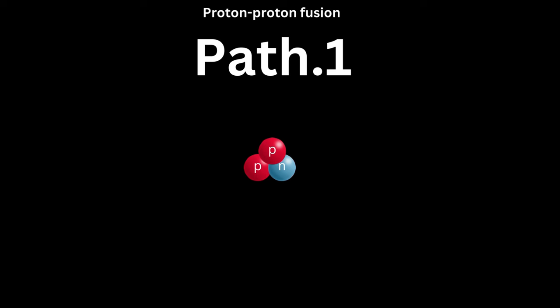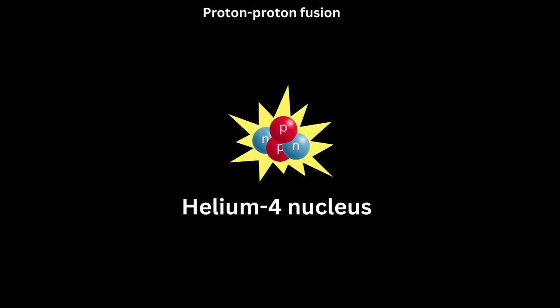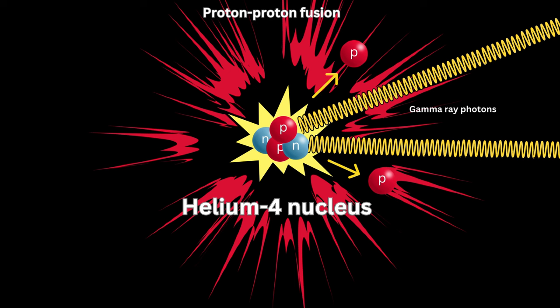Path one: Helium-3 fusion. When two helium-3 nuclei collide, a helium-4 nucleus, which consists of two protons and two neutrons, is produced. Two protons, two gamma ray photons, and a significant quantity of energy are released in this process.